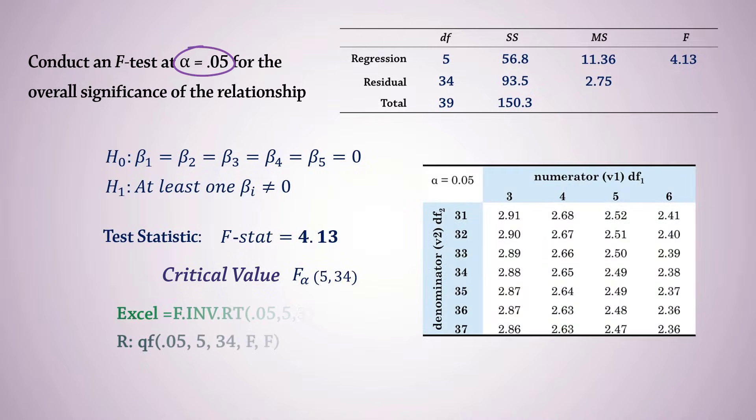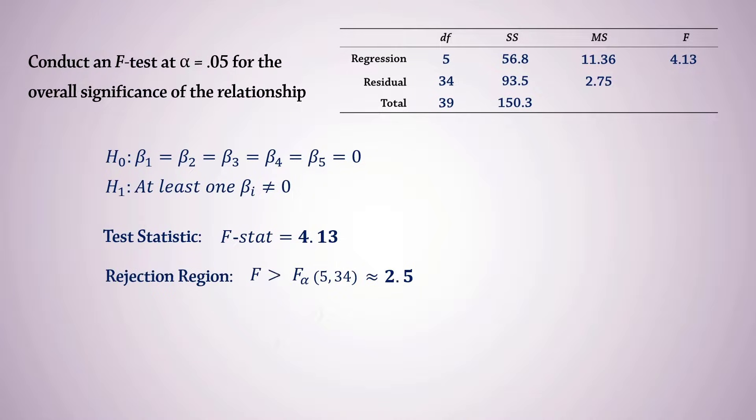At alpha equals 0.05, this critical value turns out to be approximately 2.5. In other words, we will reject the null hypothesis if the test statistic is greater than 2.5. Since our test statistic is greater than the critical value, we will reject the null hypothesis at alpha equals 0.05.